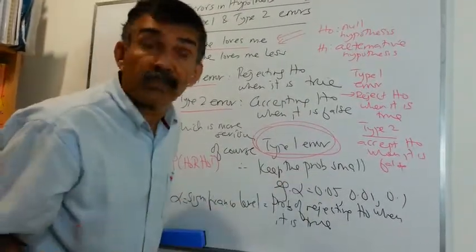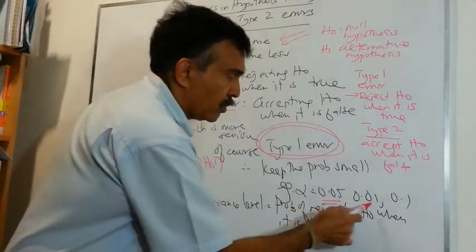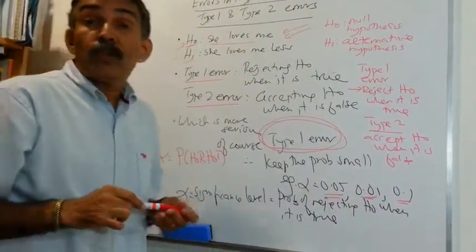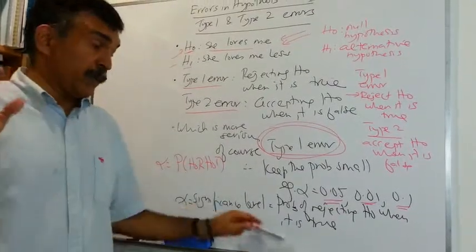The probability of a Type 1 error is called alpha. We denote that probability with alpha. Alpha is known in statistics as the significance level. So alpha is usually very small. It's usually in your exam question 5%, 1%, 10%.